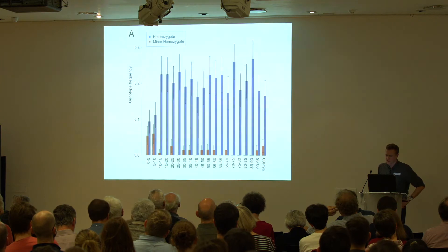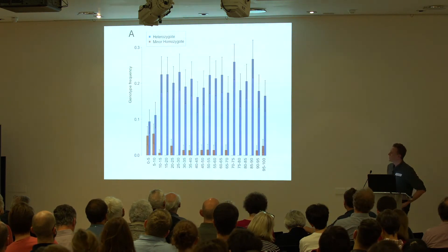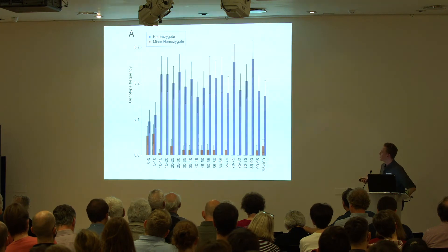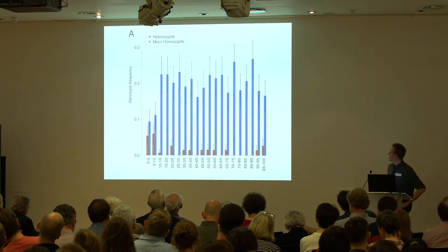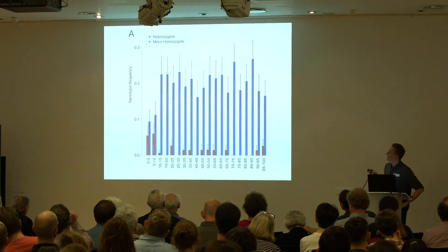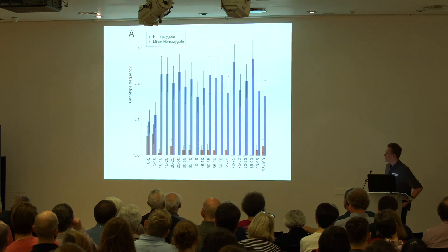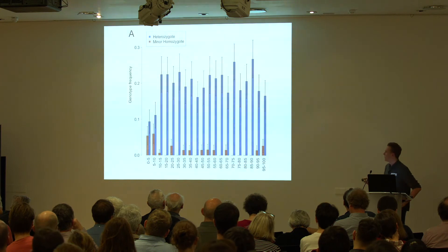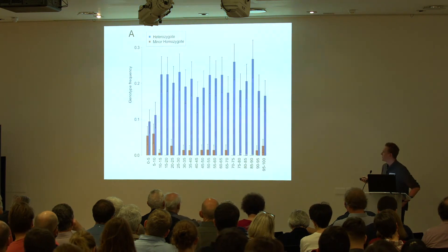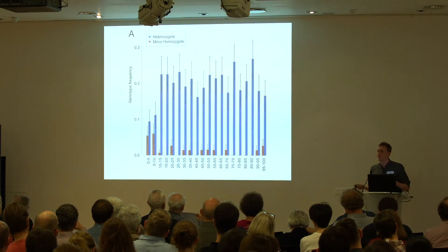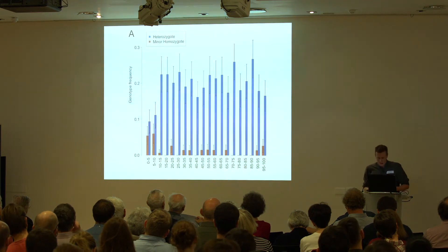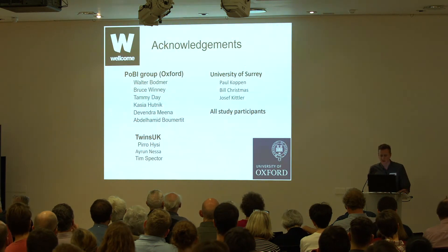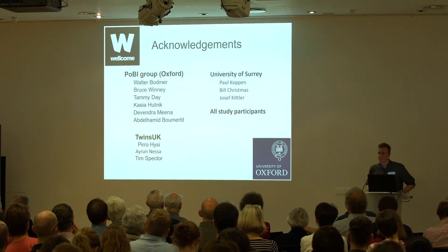I'll just show one last slide to hammer home that you wouldn't necessarily pick this up as a particularly interesting effect if you treated it as a quantitative phenotype. This is the principal component binned into 5% bins, with the genotype frequencies of the minor homozygote and the heterozygote plotted in each bin. There's not very much going on for most of the distribution — it's only in the tail that you see a strong preponderance of minor homozygotes and a paucity of heterozygotes. A linear regression might find something significant, but it wouldn't stand out as a particularly strong effect. This work was published in January in PNAS.